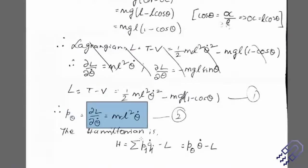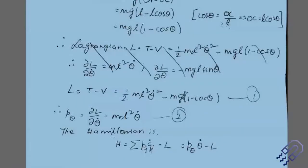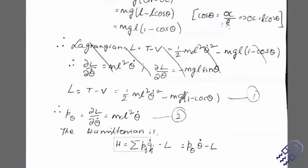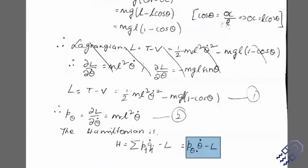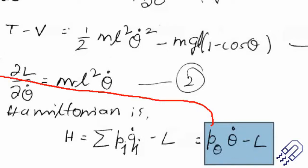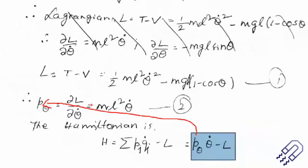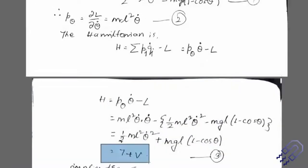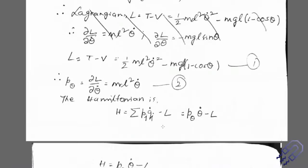Replacing theta dot with p_theta / (ml squared) in the Hamiltonian expression, we get H equals p_theta squared / (2ml squared) plus mgl(1 minus cos theta). Quite magically, the Hamiltonian comes out to be T plus V — kinetic plus potential energy — which represents total energy. This was L equals T minus V before, and now after substitution we get T plus V, confirming the system is conservative and total energy is conserved.